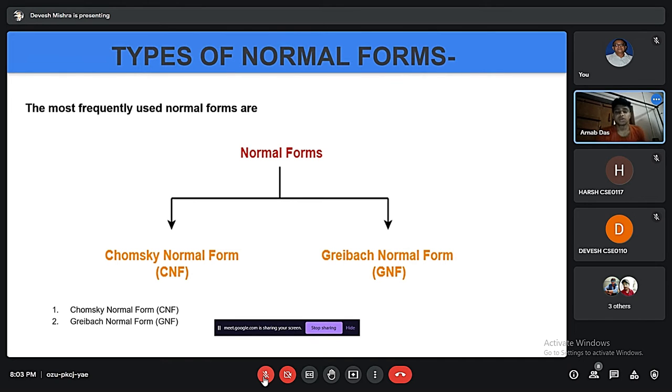There are two types of Normal Forms: CNF, Chomsky Normal Form, and the second one is GNF, Greibach Normal Form.